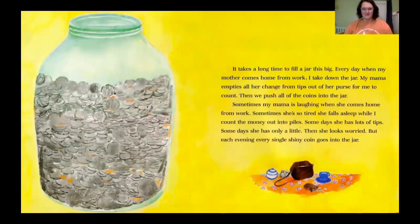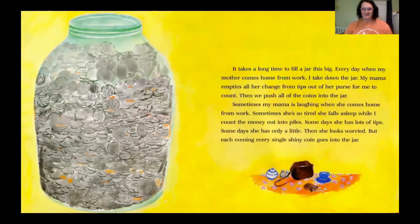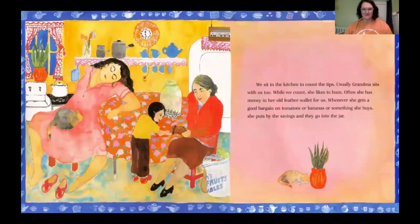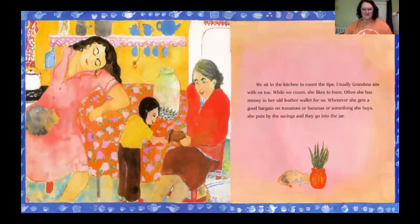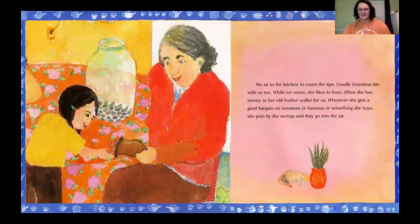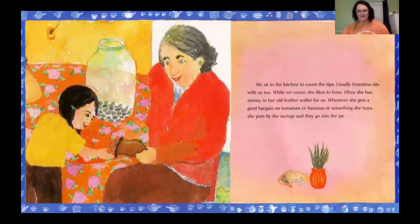Some days she has lots of tips. Some days she has only a little — then she looks worried. But each evening, every single shiny coin goes into the jar. We sit in the kitchen to count the tips. Usually grandma sits with us too. While we count, she likes to hum. Often, she has money in her old leather wallet for us. Whenever she gets a good bargain on tomatoes or bananas or something she buys, she puts by the savings and they go into the jar.